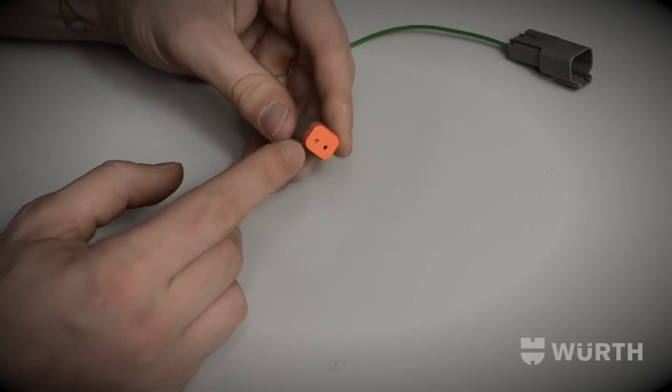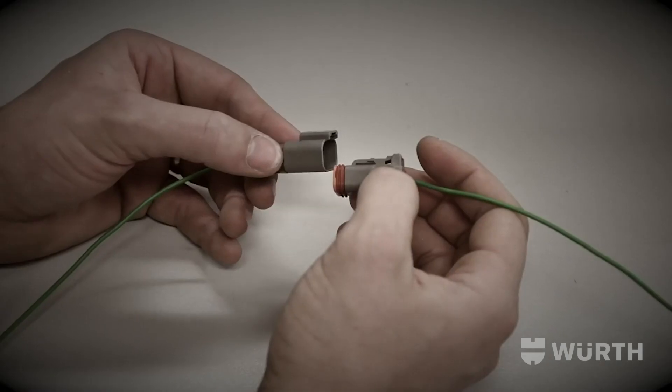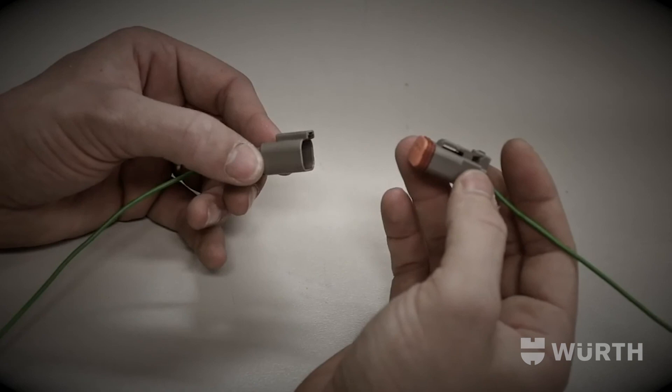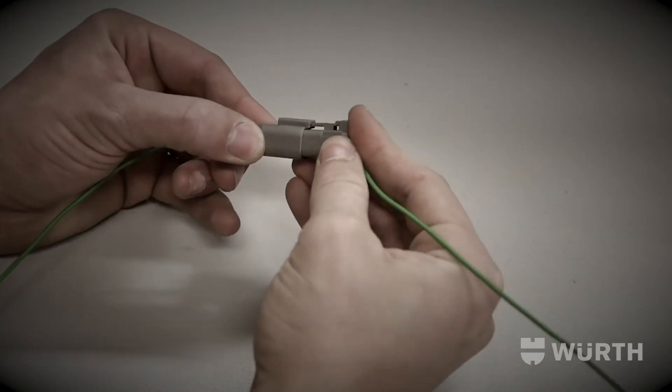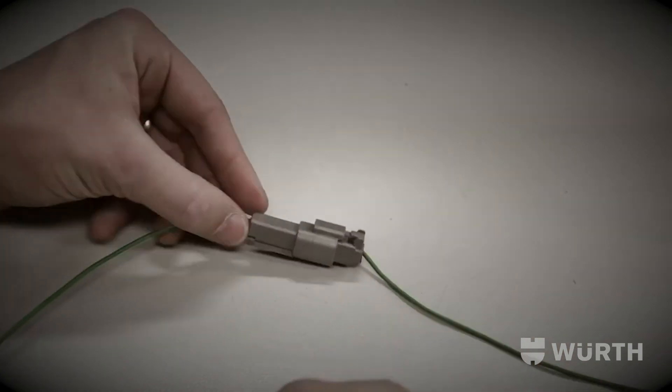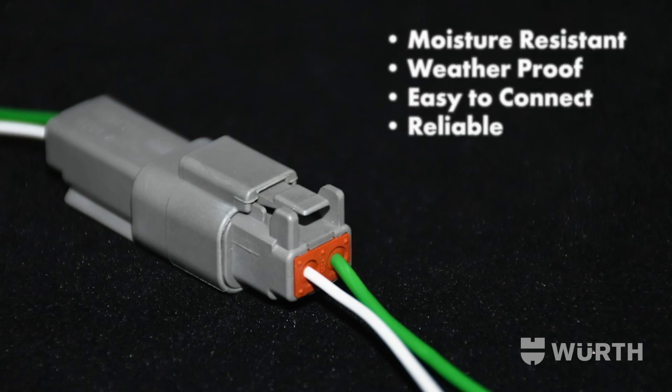Finally, ensuring the rubber seal at the front of the plug is firmly in place, the socket and plug can now be connected together. The Deutsch connection is now moisture and dust proof.